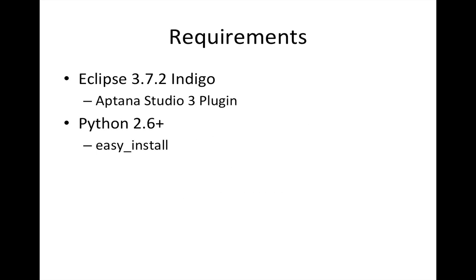Now, to follow this tutorial, it's required that you already have installed Eclipse Indigo 3.72, and you also require the Aptana 2.3 plugin. You also require to have Python 2.6 or better — actually just 2.x. You could have 2.7, but the tutorial does not cover version 3 of Python. You also require easy_install in order to do the installations we're going to see.